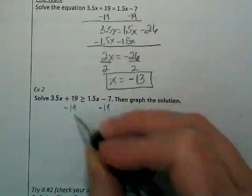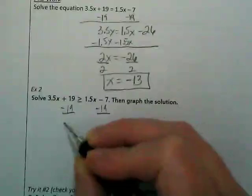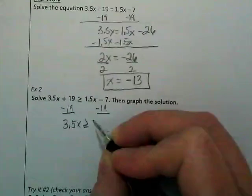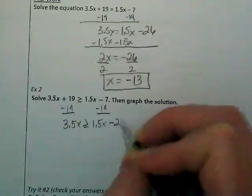I'm subtracting 19 from both sides just like I did when it was an equation. And I end up with 3.5x is greater than or equal to 1.5x minus 26.